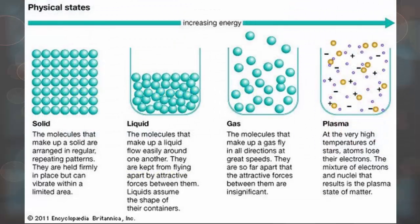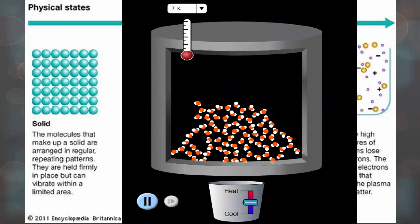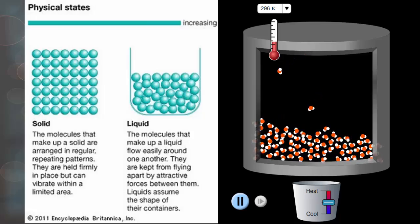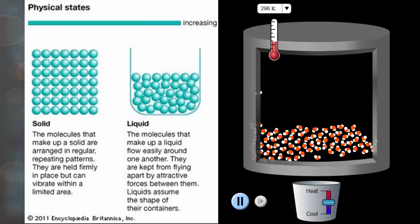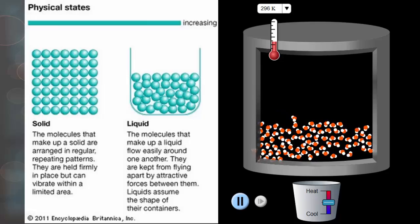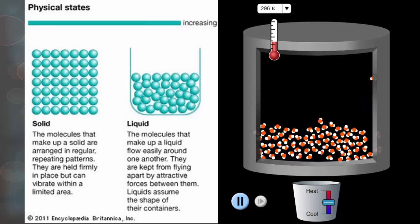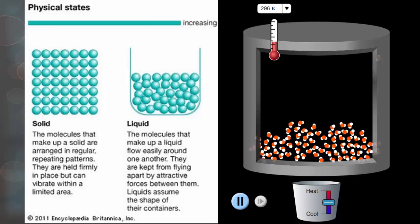So if you recall, we talked about solid, liquid, and gases, and you can see the difference between the spacing and the arrangement of the particles. So solids are arranged in regular repeating patterns, they have very close proximity to one another, and they vibrate in place. Liquids, however, have a little bit more space between their particles, and they easily flow between each other because of that space. There is some sort of attractiveness between their particles, which is why they kind of stay together.